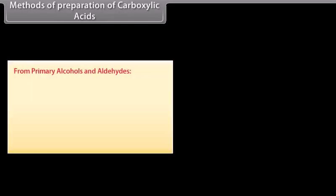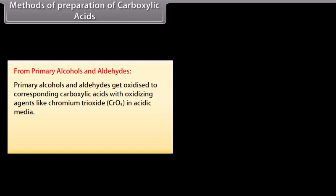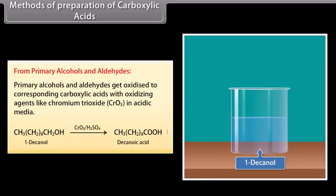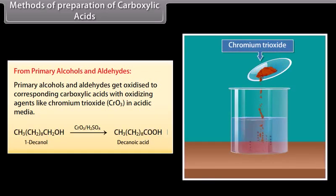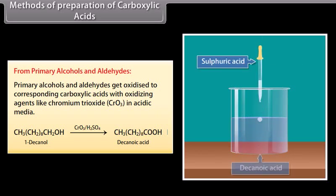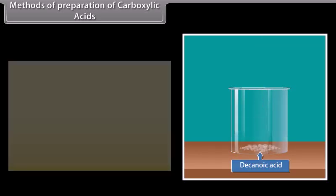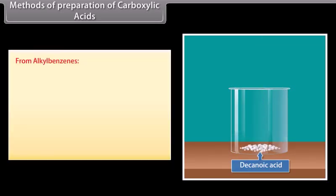Methods of preparation of carboxylic acids. From primary alcohols and aldehydes: primary alcohols and aldehydes get oxidized to corresponding carboxylic acids with oxidizing agents like chromium trioxide in acidic media. For example, 1-decanol reacts with chromium trioxide in acidic medium and forms decanoic acid.